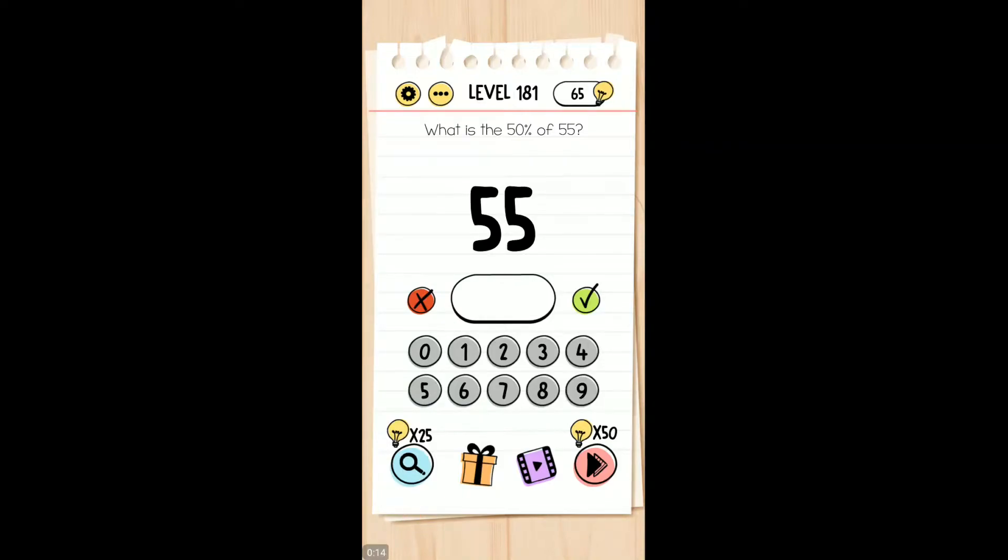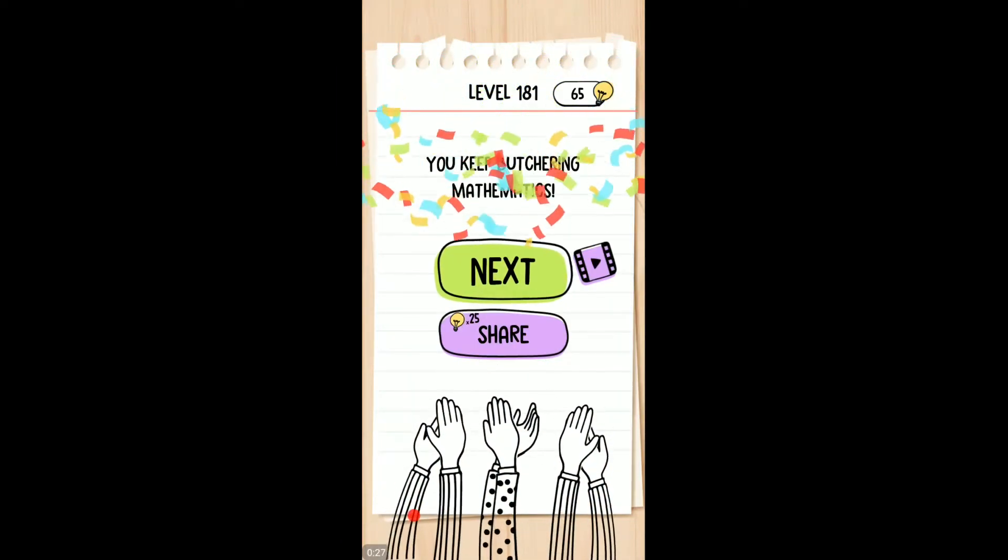What is the 50% of 55? Well, if you cover up one of the 5s, that leaves us with 5. So that's half of the 55 is 5. There we go. Kind of weird mathematics here.